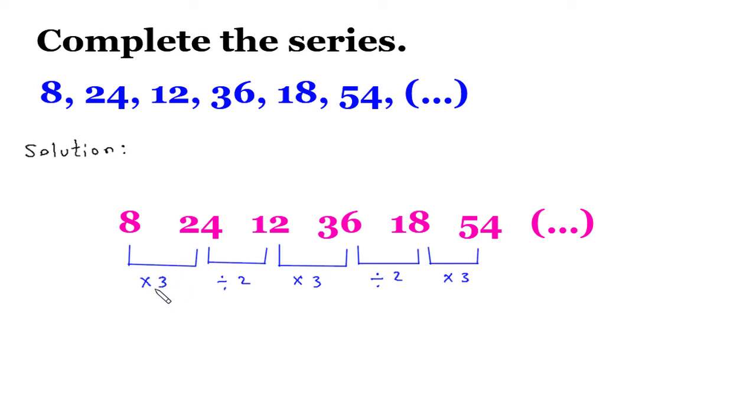Now here we can see that there is a pattern of multiplied with 3, divided by 2, multiplied with 3, divided by 2, multiplied with 3.